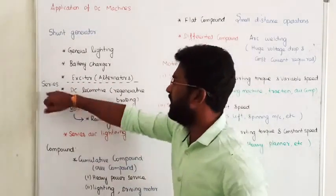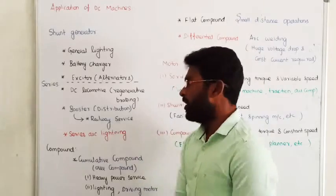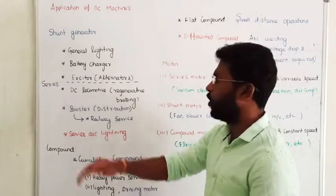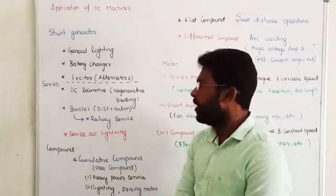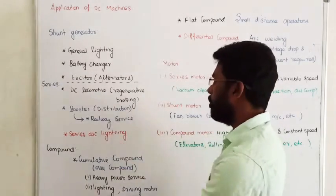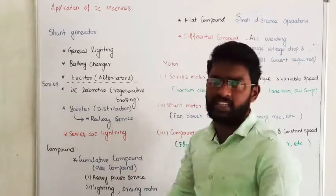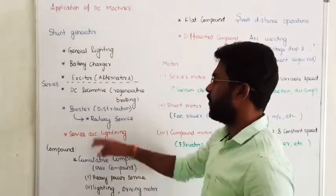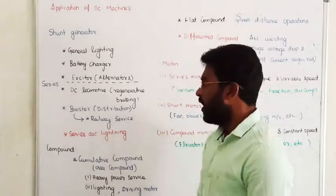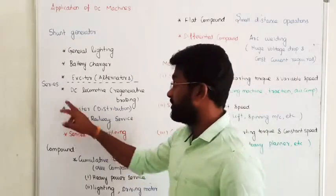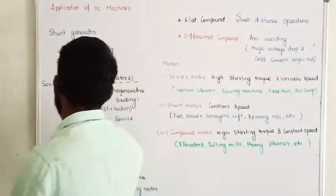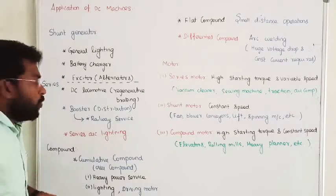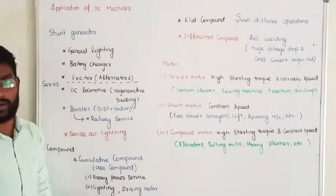Similarly, the Series Generator. The series generator is mostly used in DC locomotives. In DC locomotives, for regenerative braking, we give preference to the Series DC Generator. One more big advantage of the Series DC Generator is that it can effectively act as a voltage booster.